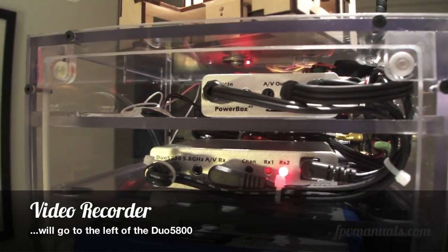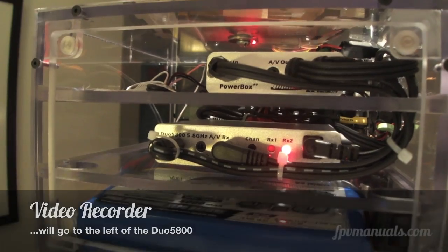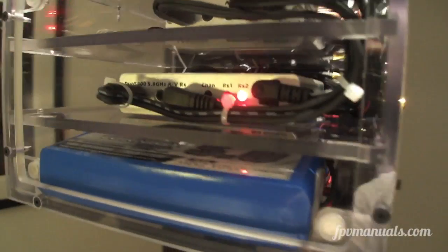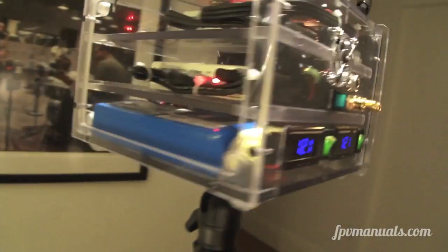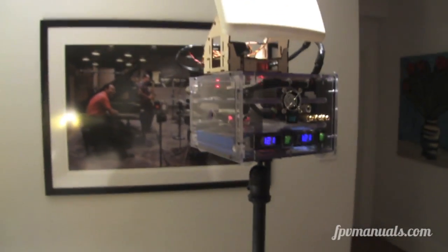You can see the power box in there and the dual 5800, and you can see the two batteries at the bottom. That's my new ground station.